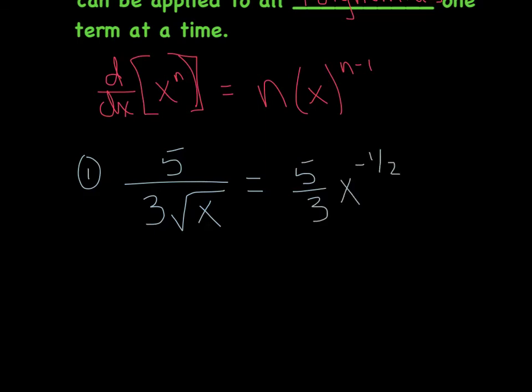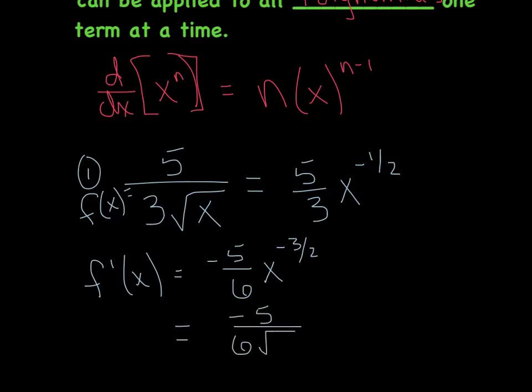And then what you could do is if this is your original f, then f prime is going to be, let's see, negative one half times the five thirds is going to give me negative five six x. The new exponent is going to be negative three halves. Make sure you subtract one there. And a lot of times what you're going to do is you're going to rewrite it so that we get rid of the negative exponent. I'm just going to say negative five divided by six times the square root of x cubed.